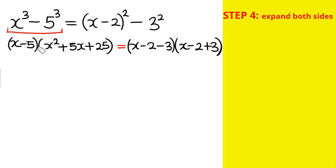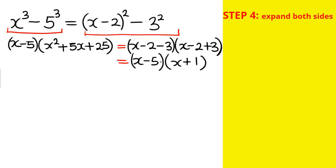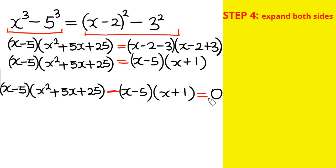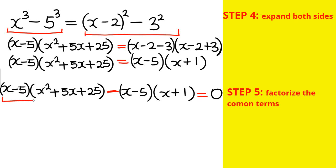Step 4: Expand both sides. The left side gives (x - 5)(x² + 5x + 25). The right side gives (x - 2 - 3)(x - 2 + 3) = (x - 5)(x + 1). Collecting everything to the left side gives the expression equal to zero, and we can see (x - 5) appears on both sides.